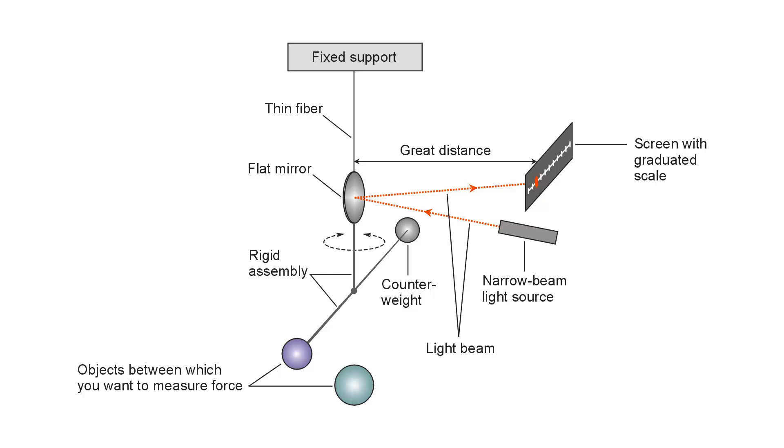Stan Jubilisko here to show you a functional diagram of a device called a torsion balance. This device is a very sensitive type of meter that can measure tiny, tiny electrostatic, magnetic, or even gravitational forces between two objects. One of them here is shown in sort of a purple-violet color, the other one in a blue-green color.